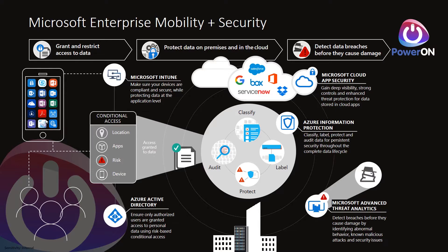EMS essentially comprises three main aspects: thinking about how we grant and restrict access to data; thinking about how we protect that data, whether on-premises or in the cloud; and looking at how we detect data breaches before they cause damage. Looking at Azure Active Directory, there is the ability to apply what is called conditional access — controlling how users gain access to information based on who the user is, where they're accessing from, the application they're using, the risk profile, and the device being used.